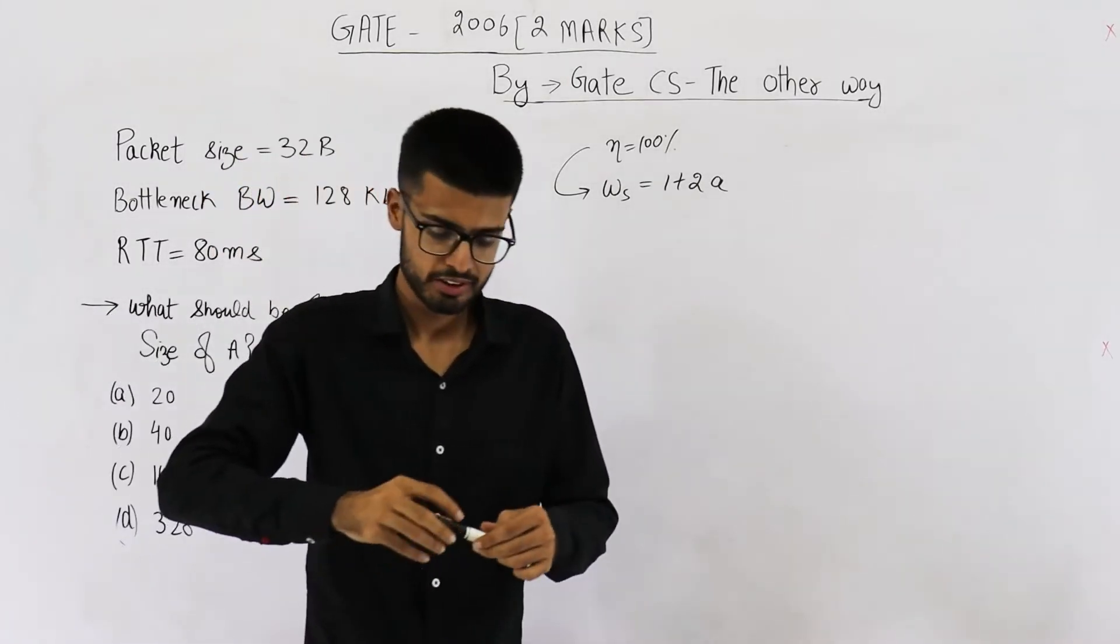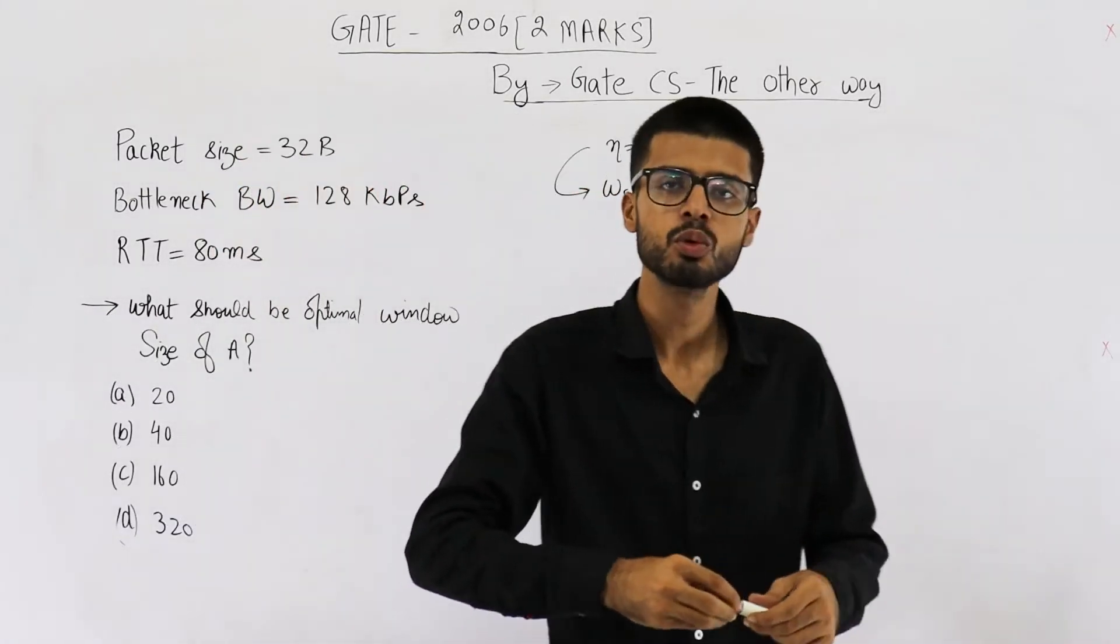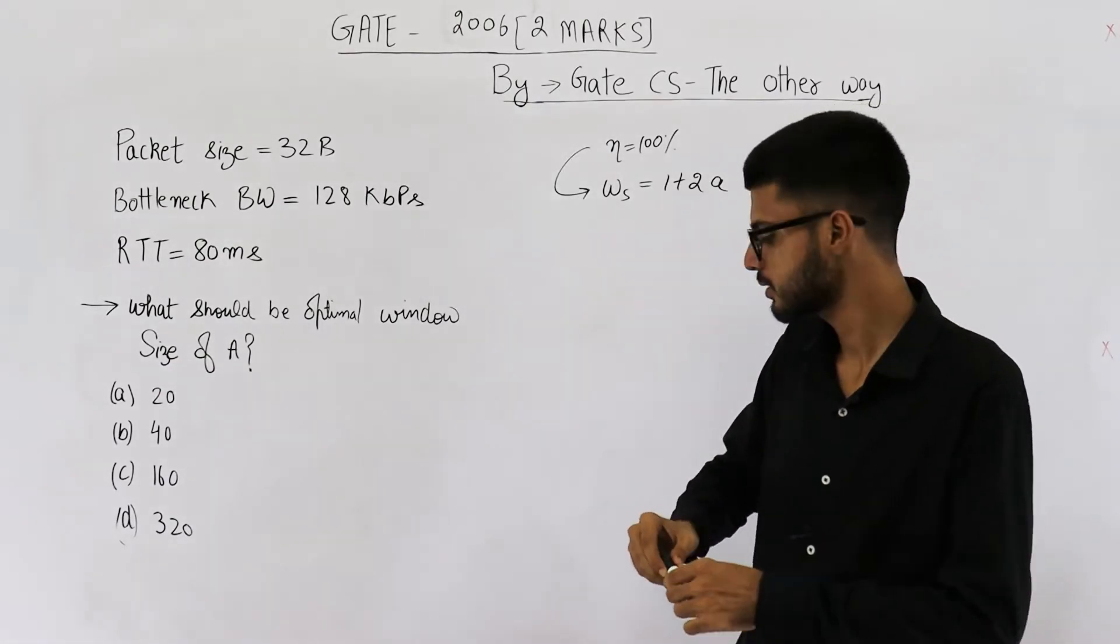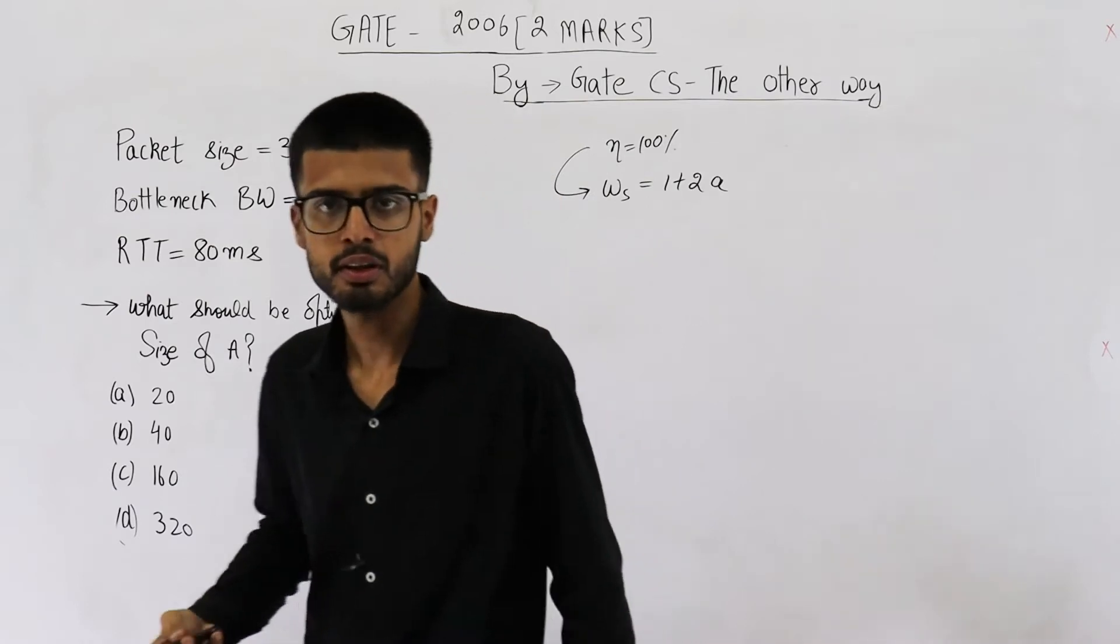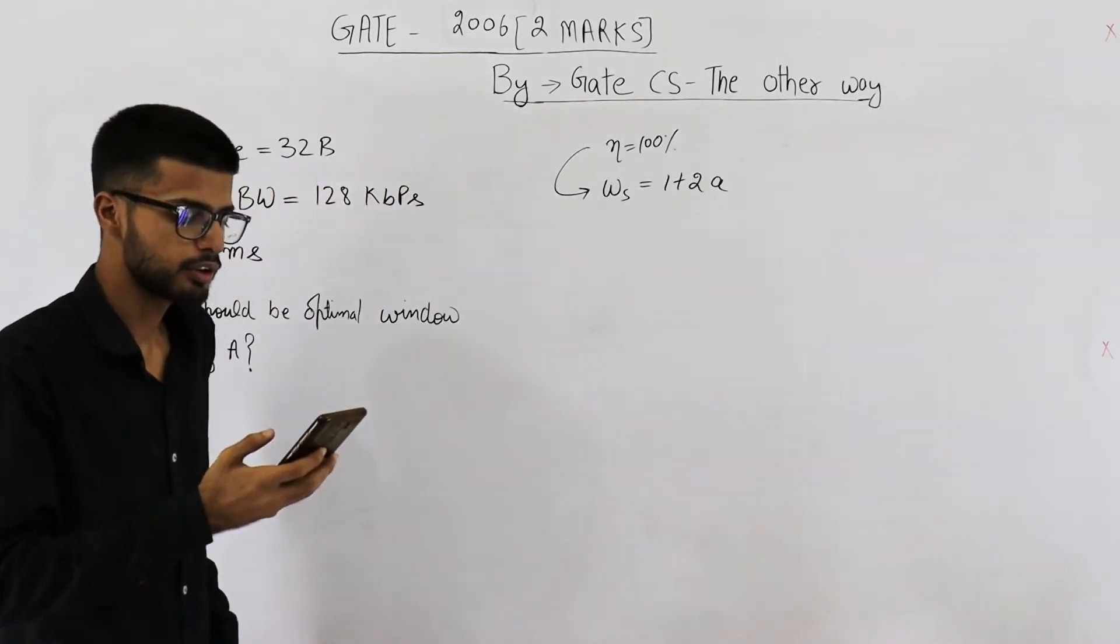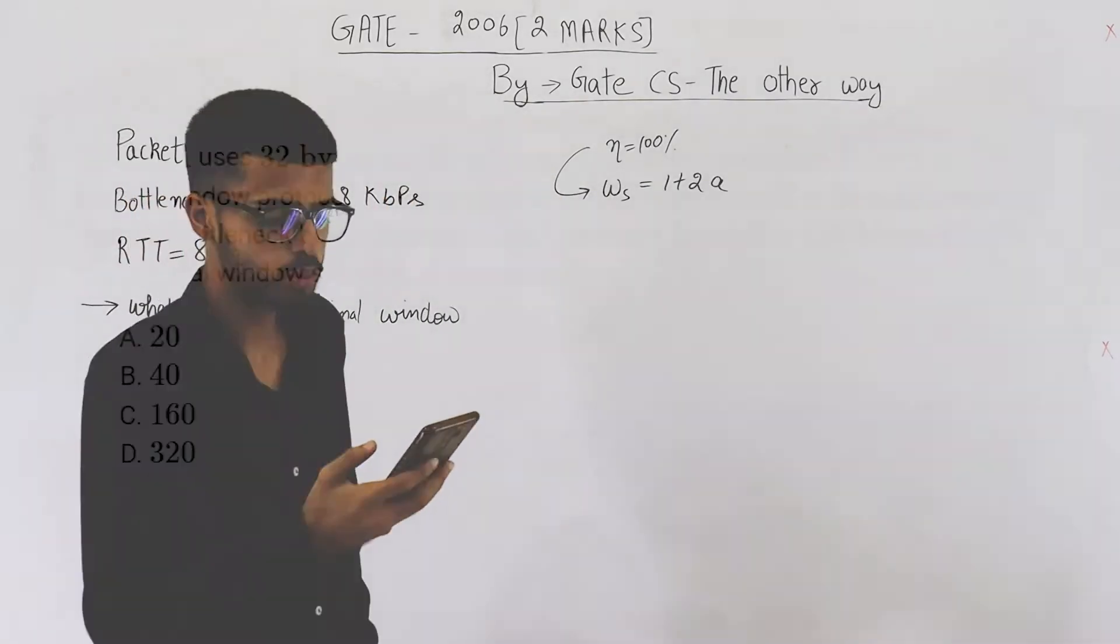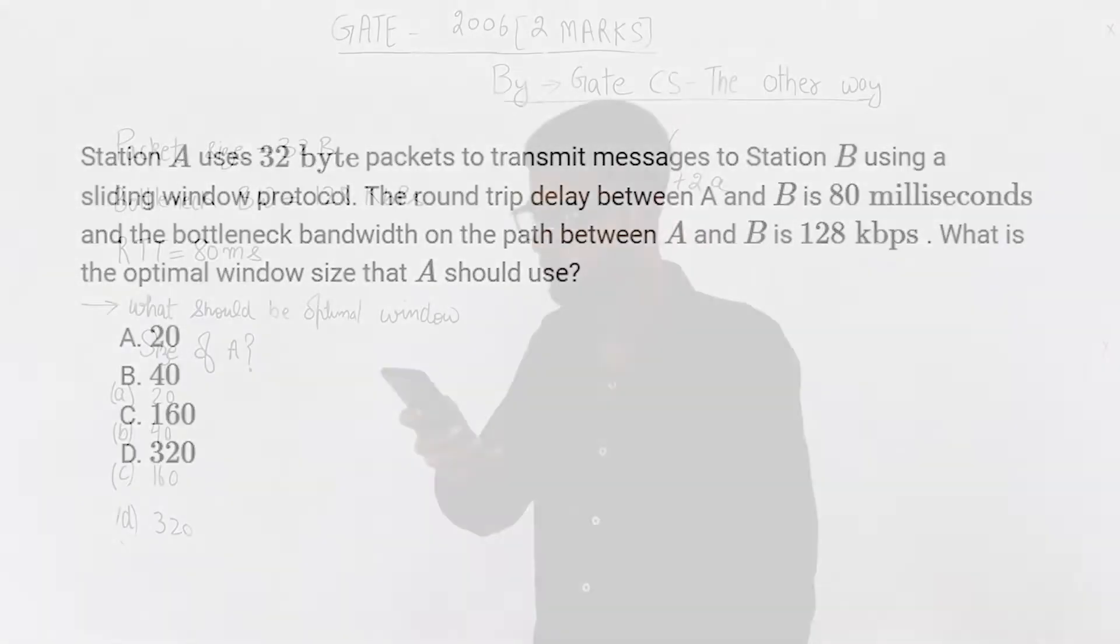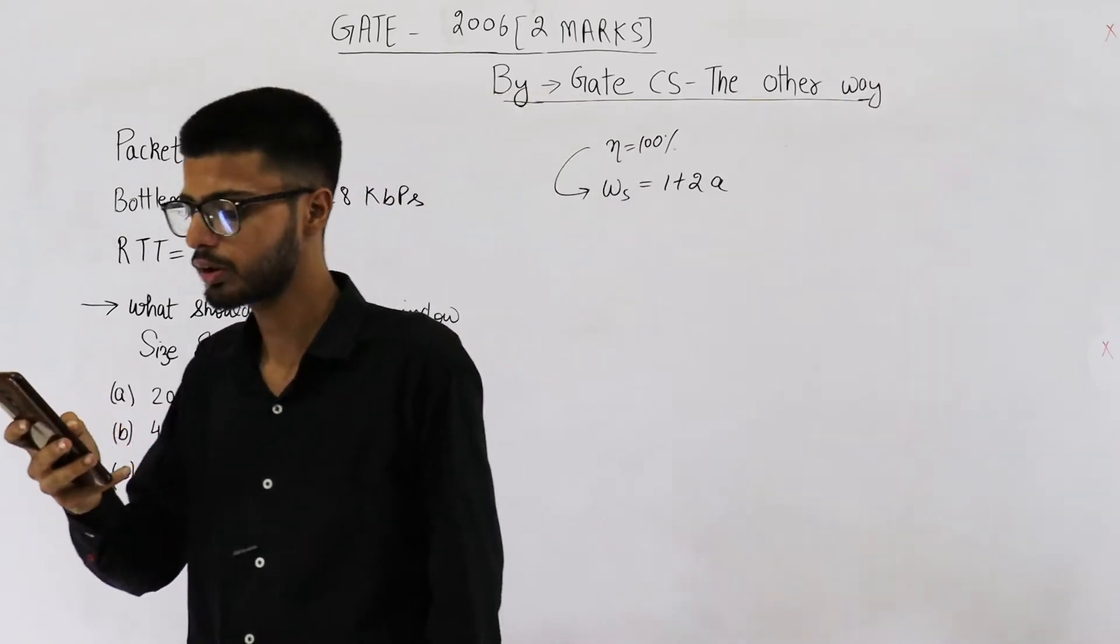Hello people, welcome back. This question is from the GATE exam of 2006. It was asked for two marks. They are saying that a station A uses 32 byte packets to transmit messages to station B using sliding window protocol. The round trip delay between A and B is 80 milliseconds and the bottleneck bandwidth on the path between A and B is 128 kbps. What is the optimal window size that A should use?